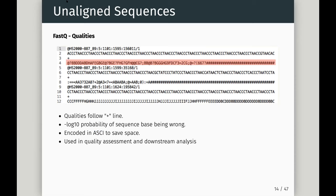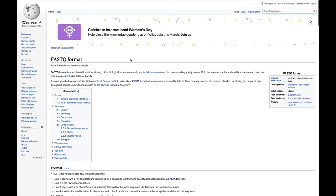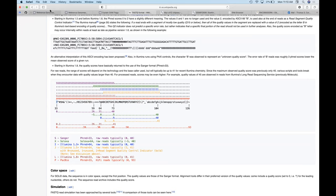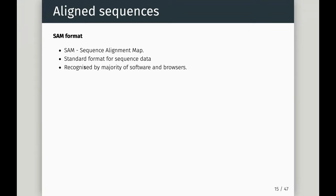FASTQ contains lots of useful information for this unaligned data. For more on the encoding, FASTQ format on Wikipedia has a lovely description of Phred scores and how they're encoded into ASCII characters — but the computer handles this for us. Next we'll look at SAM format, the aligned format — Sequence Alignment Map. It has become the standard format for sequence data; Illumina themselves had their own format, but SAM is the format wall for sequencing data, recognized by a majority of software and genome browsers.